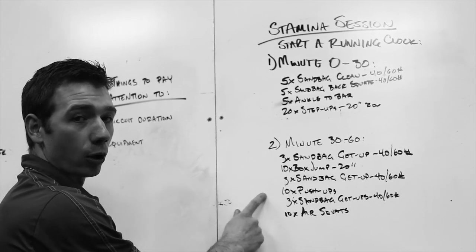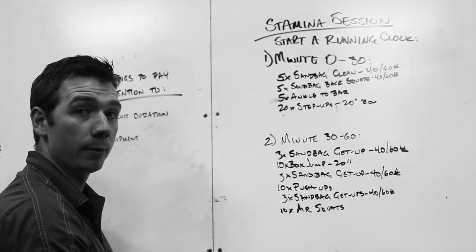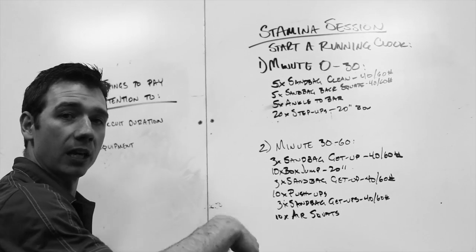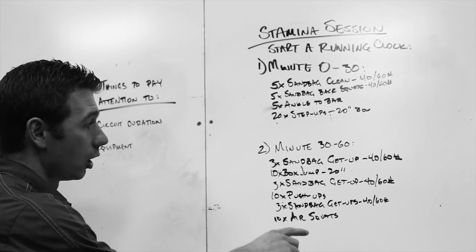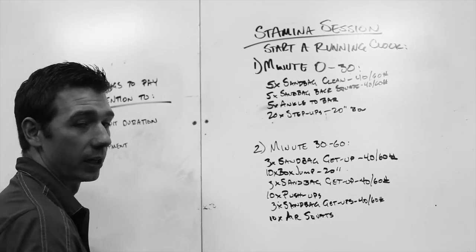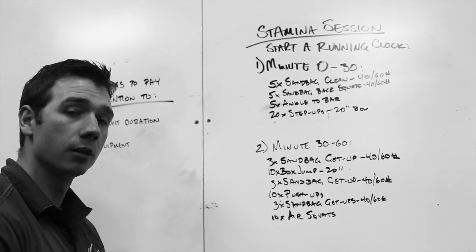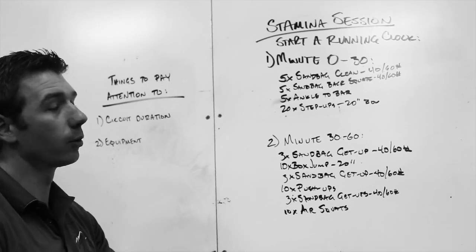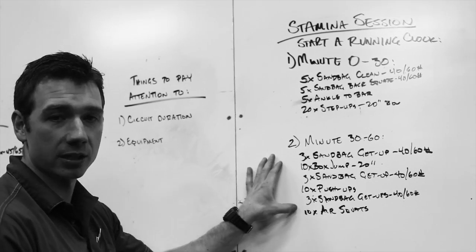So by not adding any more equipment or by having you use the same equipment and do different movements, we can ensure that you can continue moving. So in this one the equipment that we need is a sandbag again and then a 20 inch box just like up here.